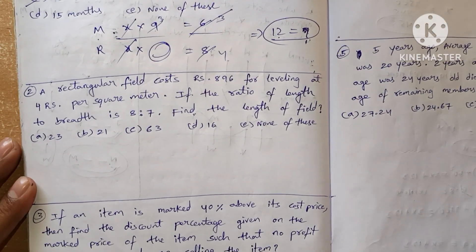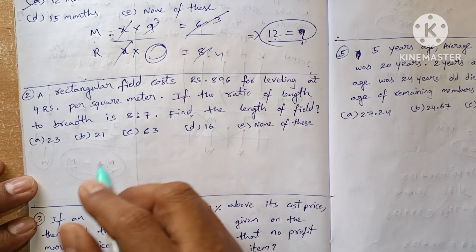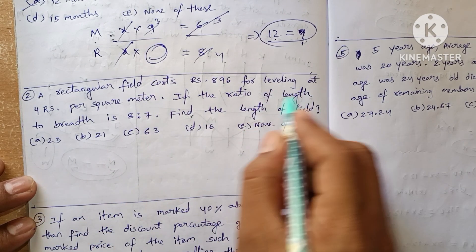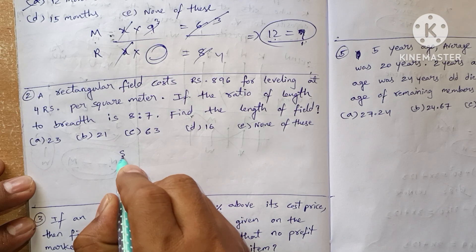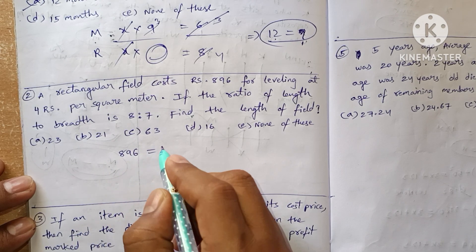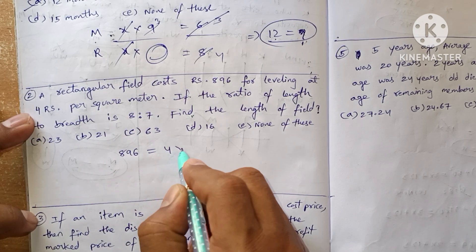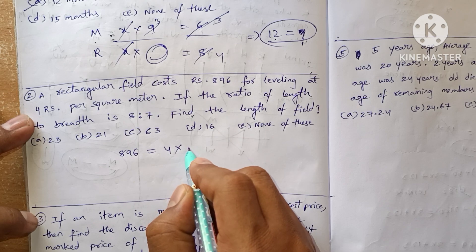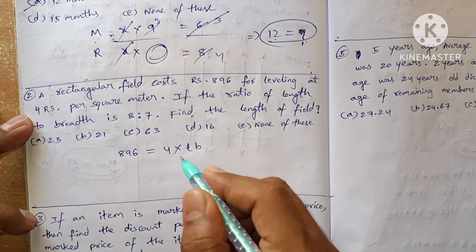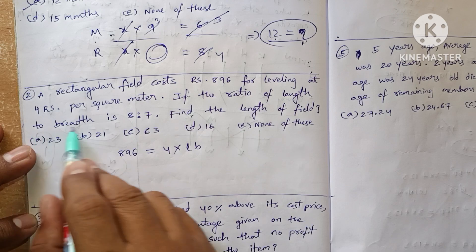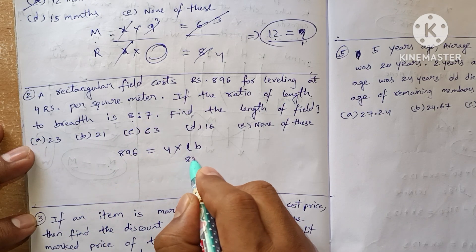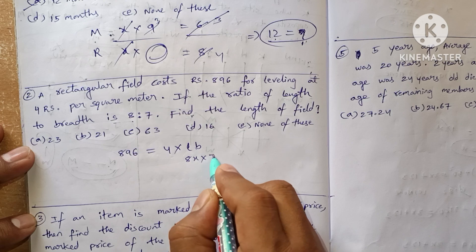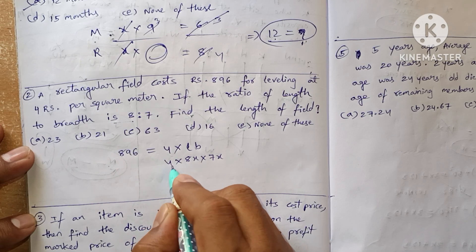A rectangular field costs 896 rupees for leveling at 4 rupees per square meter, which means the area L × B costs 896 rupees. If the ratio of the length to the breadth is 8 to 7...